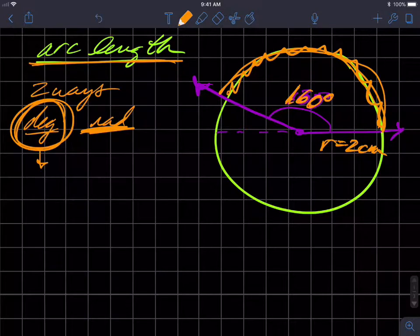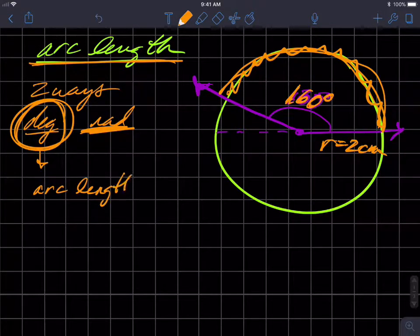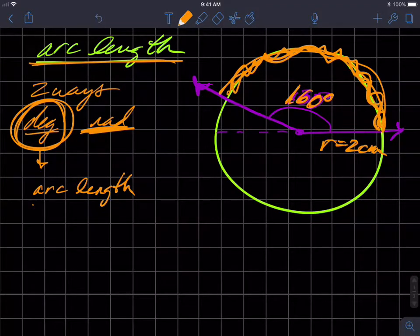We're going to have the arc length, which is some distance around part of the circle, this part of the circle. And we're going to set up a proportion, a ratio on the left side equal to a ratio on the right side, which is called a proportion.